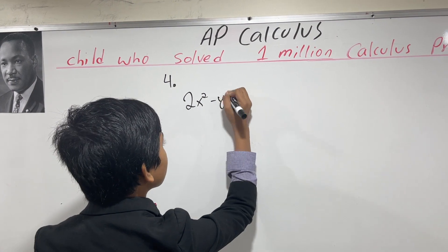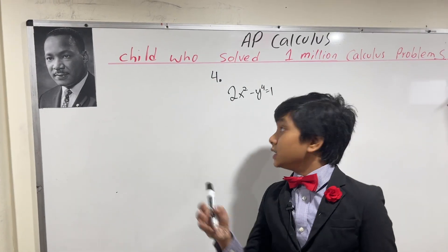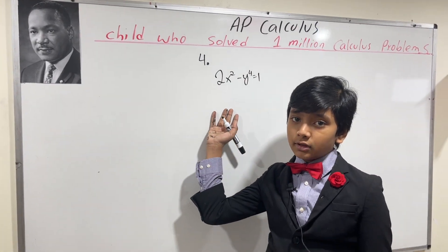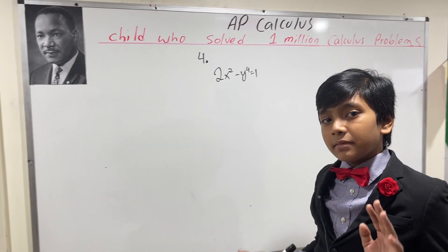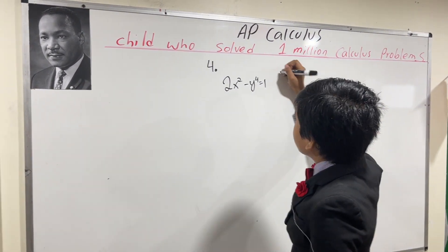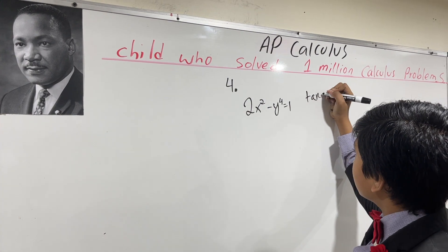2x squared minus y to the fourth equals 1. I know this doesn't look like a normal function now, does it? But it's going to be fun. What we're trying to do is we're trying to take the tangent line.